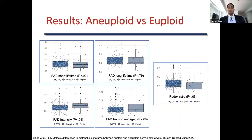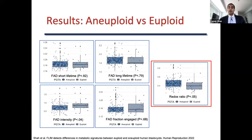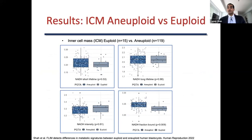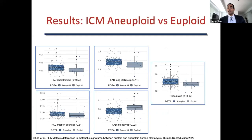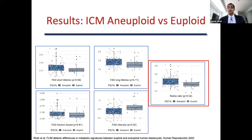These graphs represent the FAD and redox ratio metabolic parameters. When comparing euploid versus aneuploid embryos, a significant metabolic difference was seen in FAD intensity and redox ratio, and bootstrap resampling confirmed these associations. We also wanted to see if metabolic differences were present when analyzing the inner cell mass alone. When comparing euploid inner cell mass versus aneuploid inner cell mass, significant metabolic differences were seen in NADH fraction bound, FAD intensity, and redox ratio.